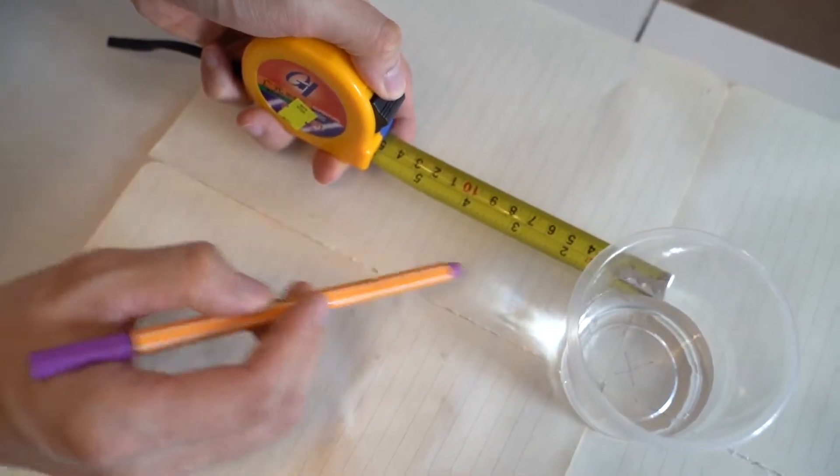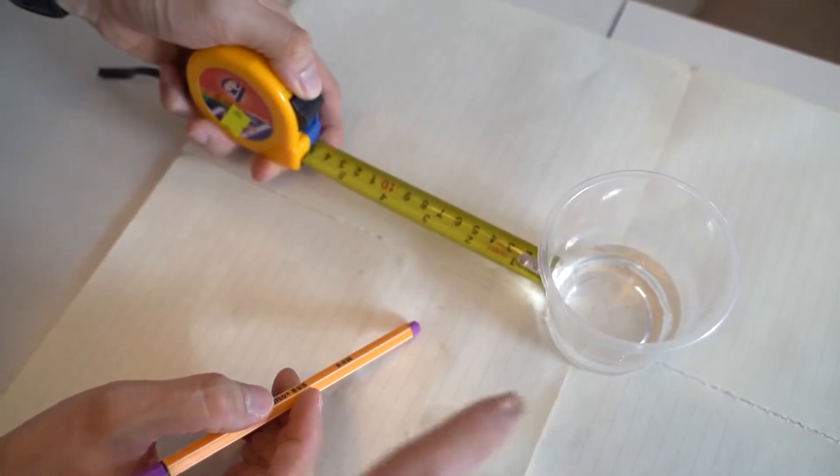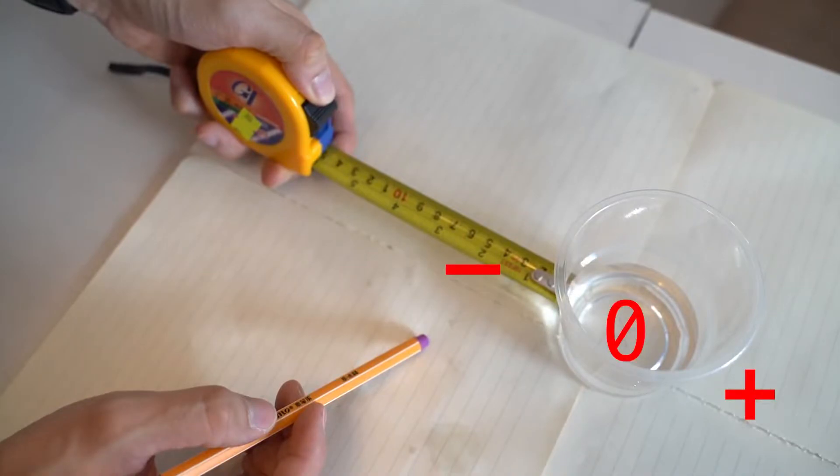For our measuring system, we measure where the ball lands in relation to the cup. If the ball hits the cup, the distance is zero. But if the ball hits outside the cup, we label the part where the ball lands beyond the cup as positive, and if the ball lands behind the cup as negative in distance. The distance here is centimeters.